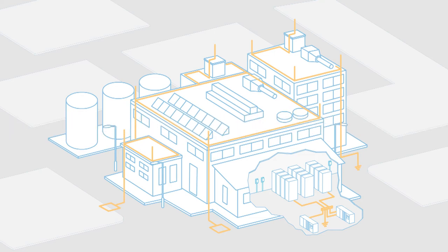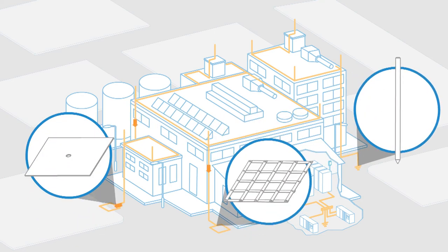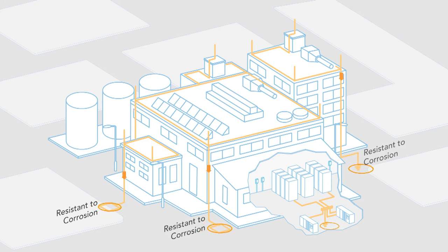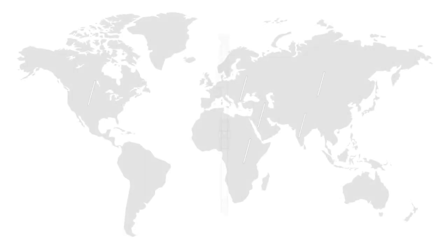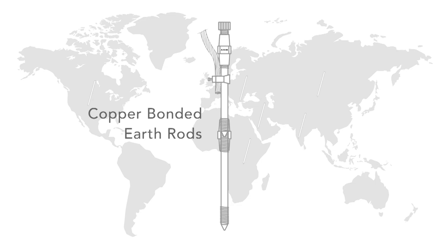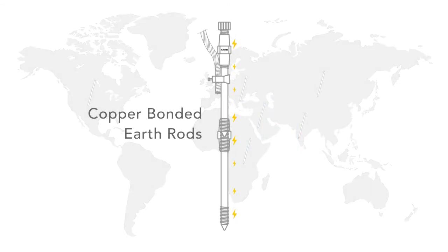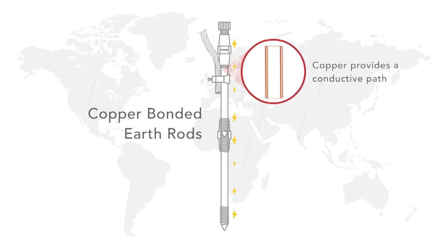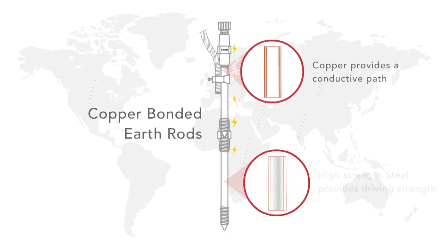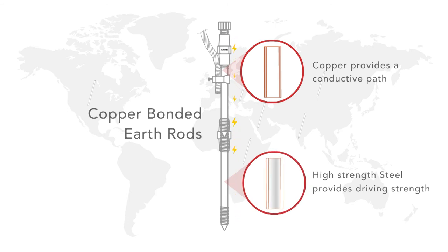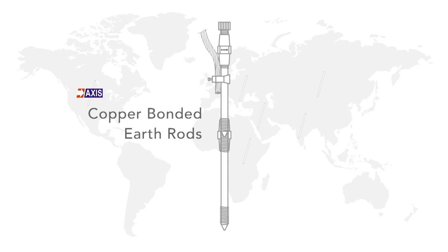Earth Termination: An earth electrode should provide low electrical resistance with the earth to allow for the dissipation of currents. It should also be resistant to corrosion because it will be buried underground for a long period of time. Worldwide, one of the most popular earth electrodes are copper bonded earth rods, which comply with IEC 62561 part 2. Since electricity is a surface phenomenon, the copper layer allows for a conductive path while the inner core of high-strength steel provides the strength required for driving the rod into the ground. Axis copper bonded earth rods have been approved by utilities across the world and continue to be popular due to their consistently high quality.